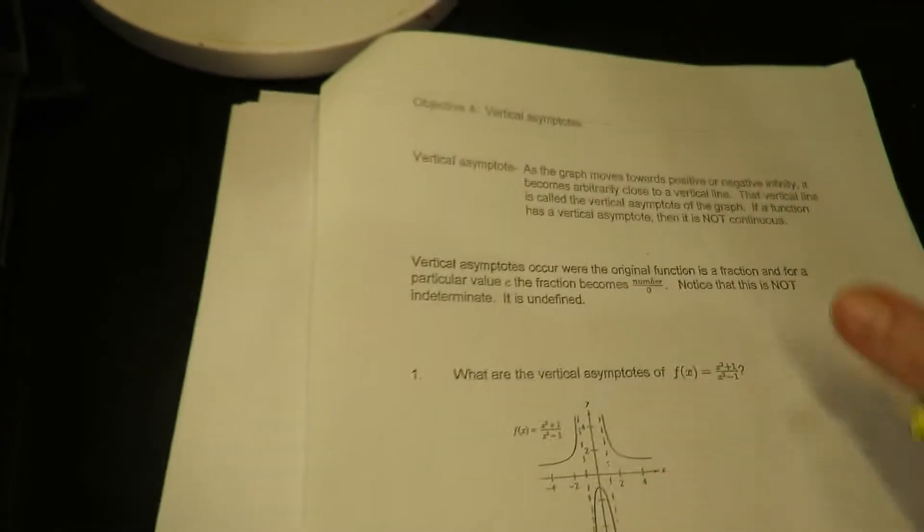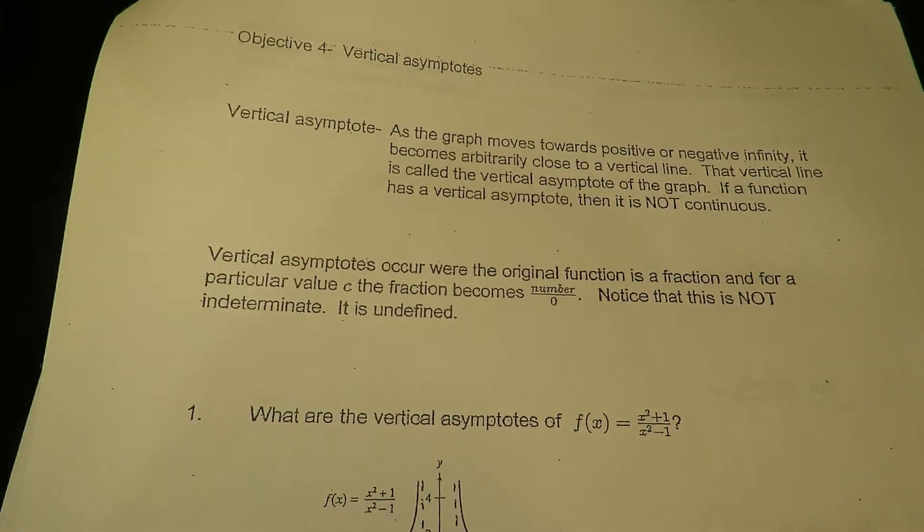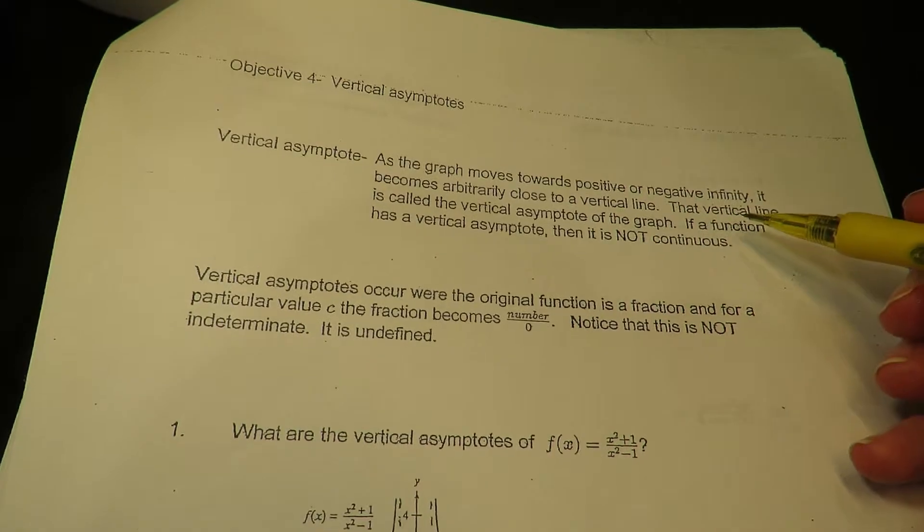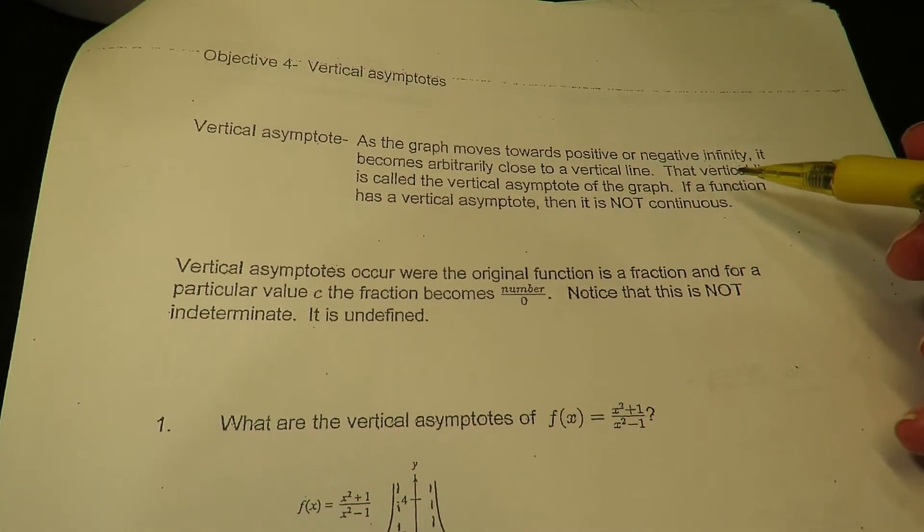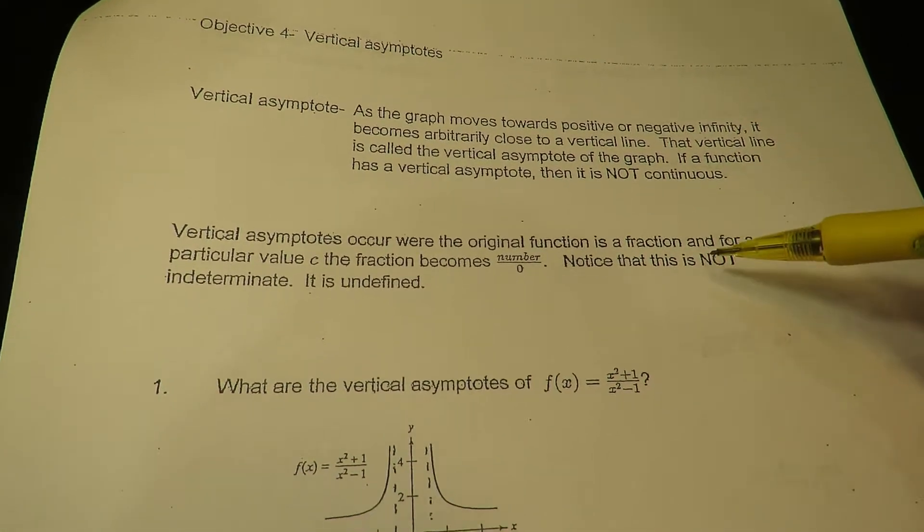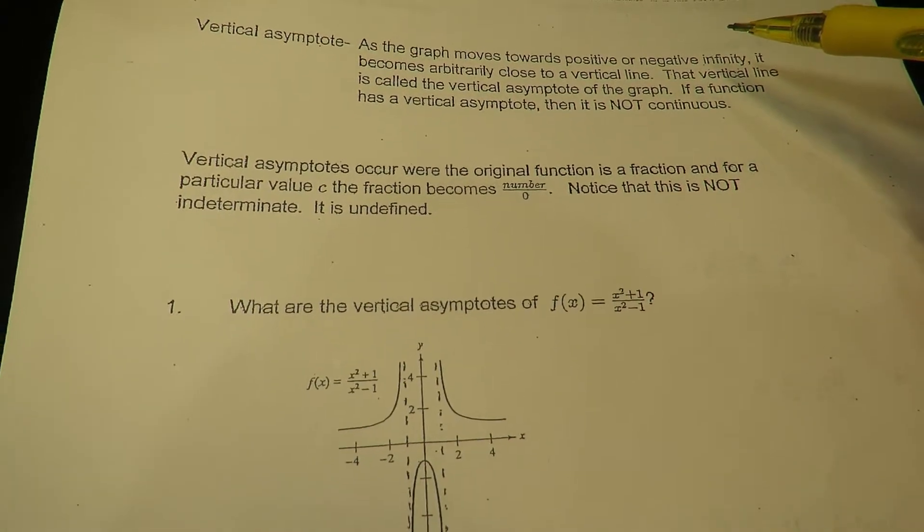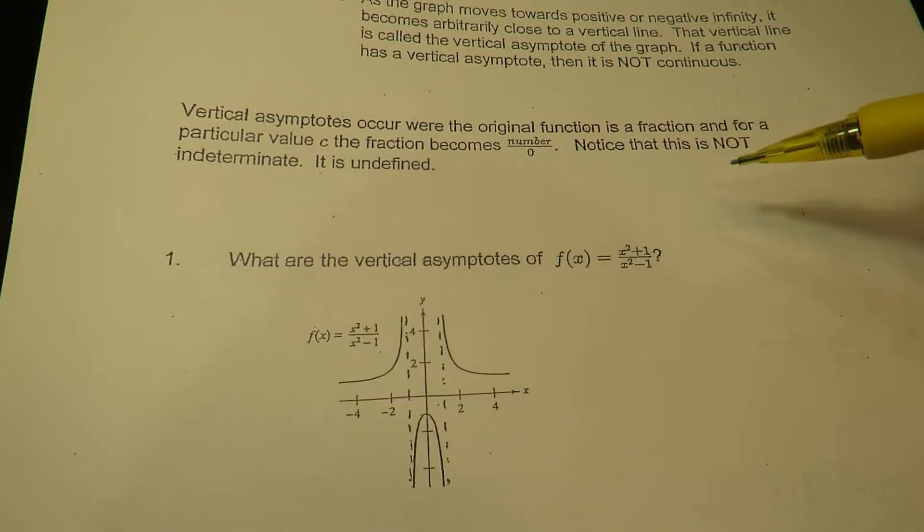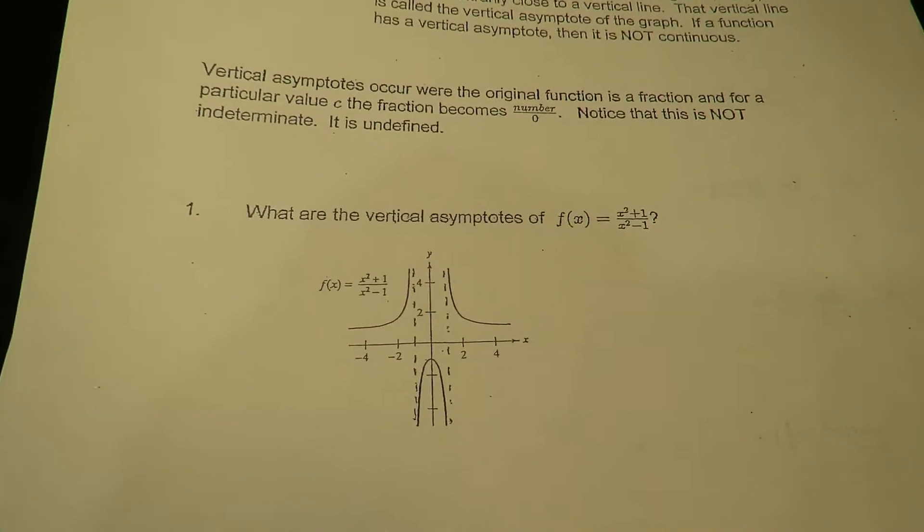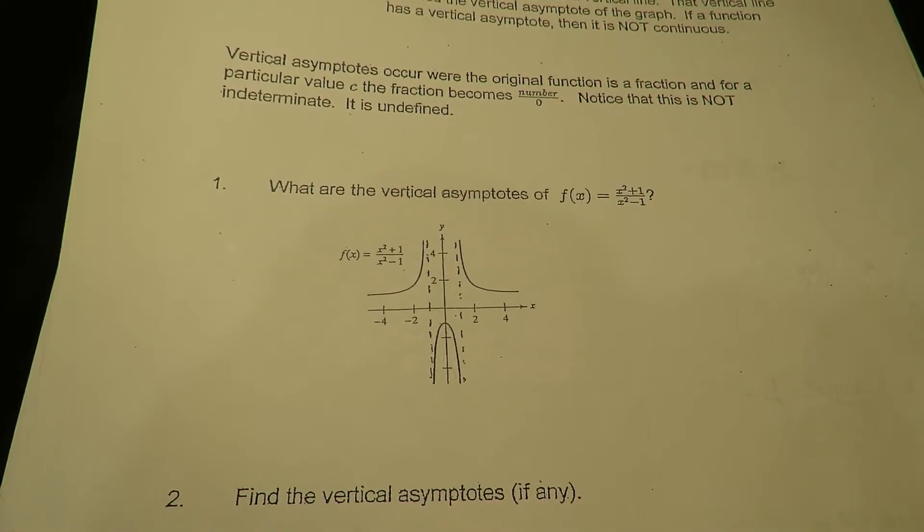Alright, let me see what's on the next side here. Alright, vertical asymptotes. I guess I'll start this little bit with you. Vertical asymptotes is a line that your function approaches where it becomes unbounded, meaning your output becomes unbounded. So notice we're talking about the output becoming unbounded versus the input.